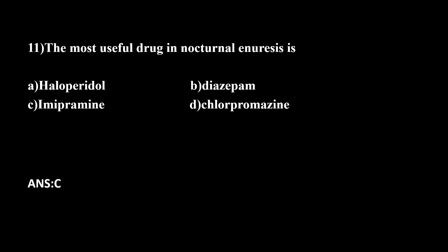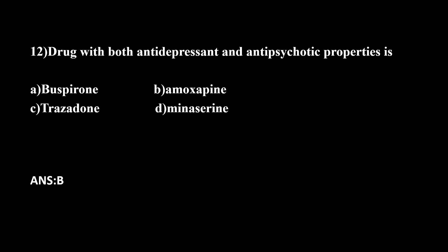Twelfth question: Which drug has both antidepressant and antipsychotic properties? Options are: A. Buspirone, B. Amoxapine, C. Trazodone, D. Mianserin. Amoxapine is the correct answer — it is an antidepressant and also behaves like an atypical antipsychotic, making it a derivative with both properties.